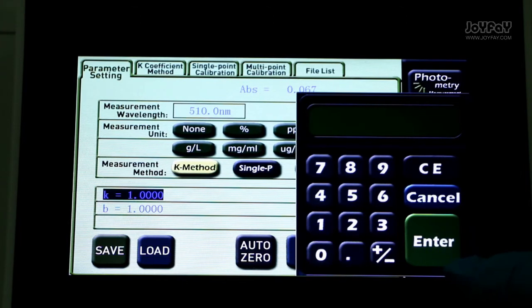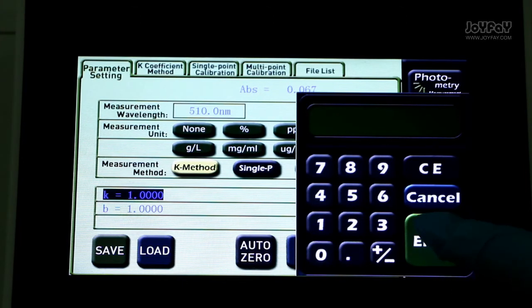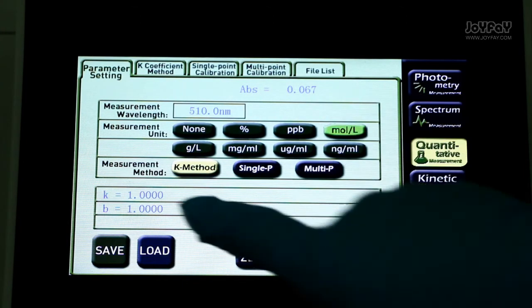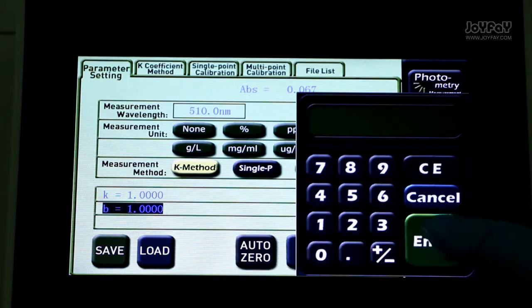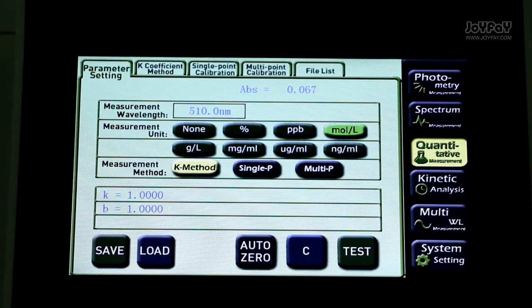If you choose k coefficient method, you need to enter k and b values. You can see the result in tag 2.